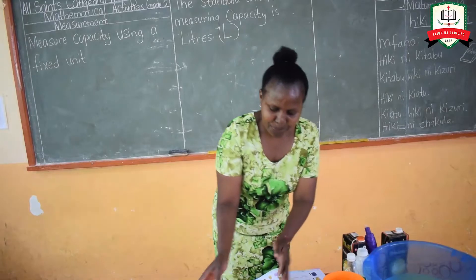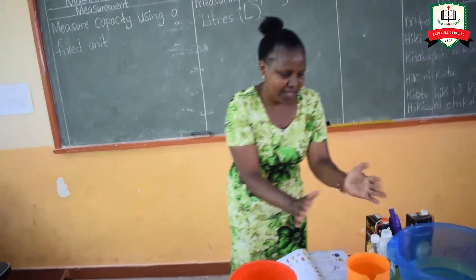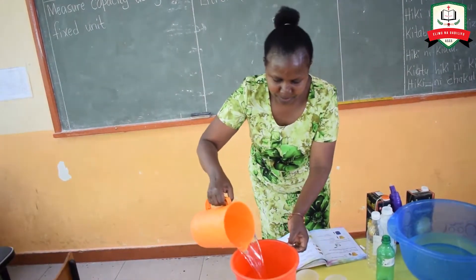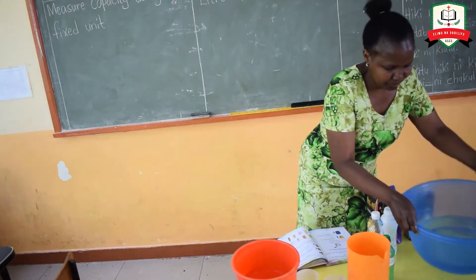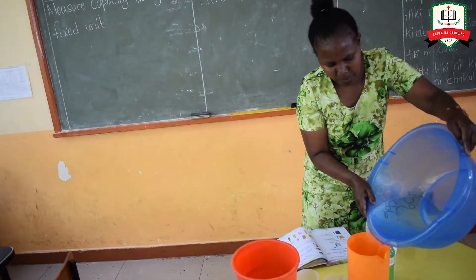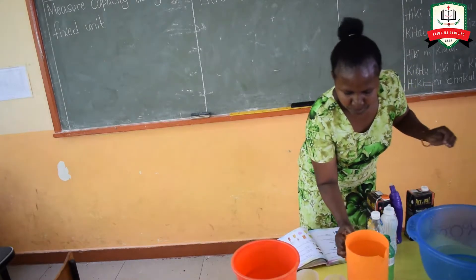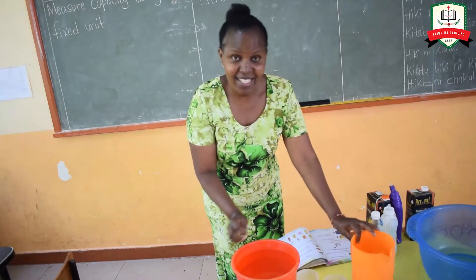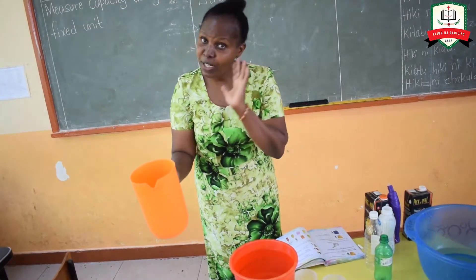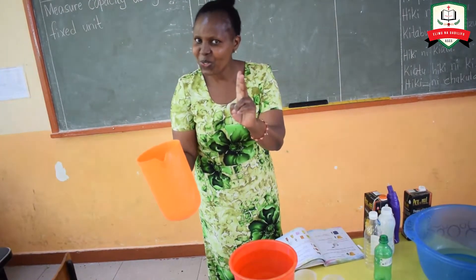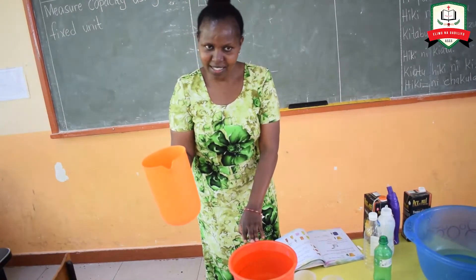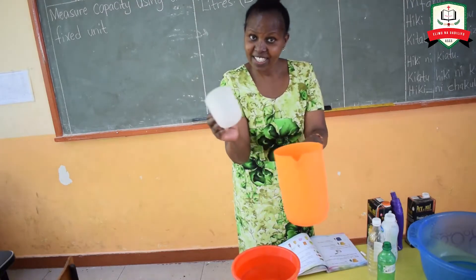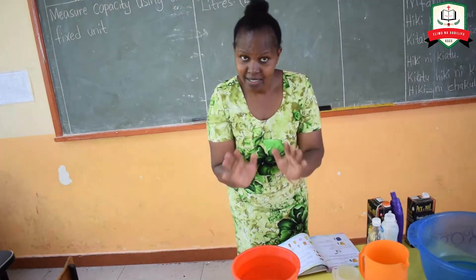So what is the capacity of my bucket? I'm going to use this jug to find the capacity of my bucket — filling one, two. So the capacity of my bucket is two jugs. If next time I want to fill my bucket, I will use two jugs. And how many cups did I use to fill my jug? Seven cups. So the capacity of my jug is seven cups, and the capacity of my bucket is two jugs.